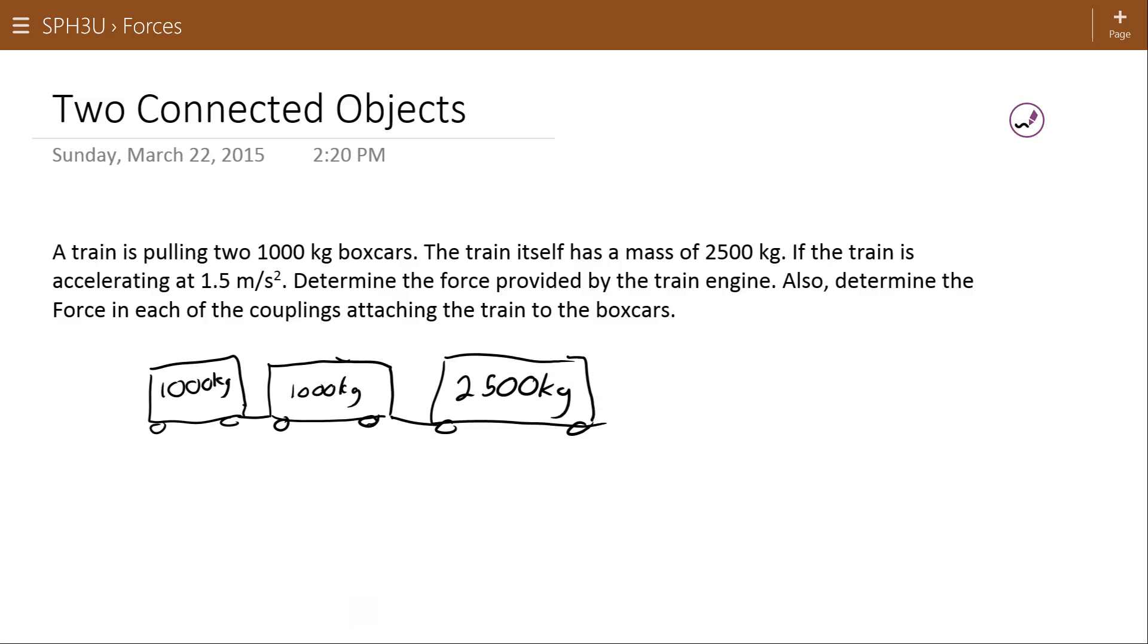The train is accelerating at 1.5 meters per second squared. Determine the force provided by the train engine. Also determine the force in each of the couplings attaching the train to the boxcars. We have no information about friction or resistive forces in this question, so I guess we're going to assume that they're ignorable or zero.